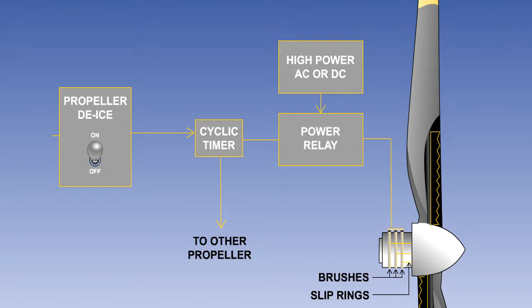Slip rings and brushes are components used to transfer electrical power from a stationary part to a rotating one. They are fully explained in the electric system series of lessons.